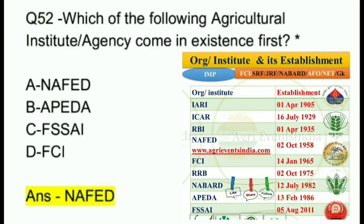Question 52. Which of the following Agriculture Institute or Agency came into existence first? A. NAFED. B. APEDA. C. FASAI. D. FCI. And the answer is NAFED.